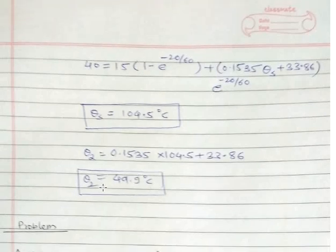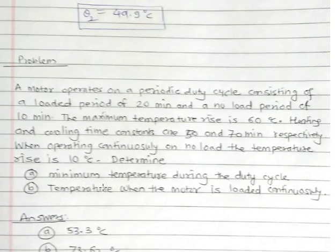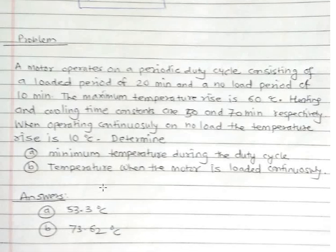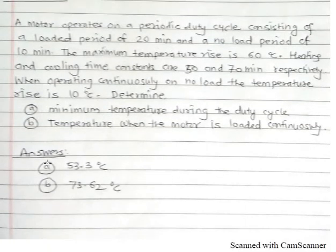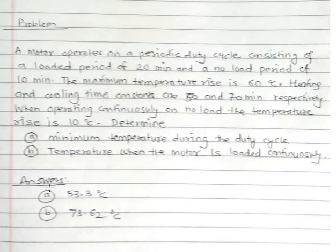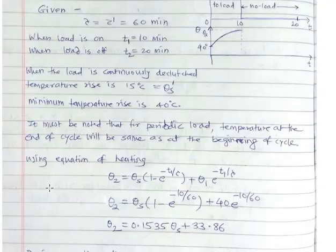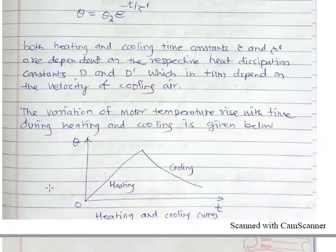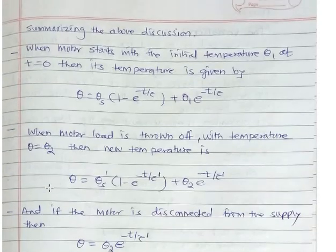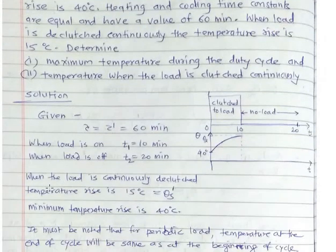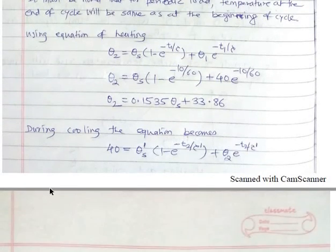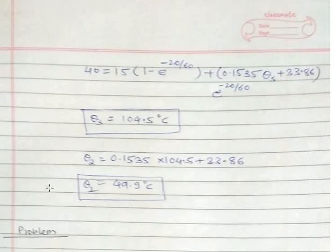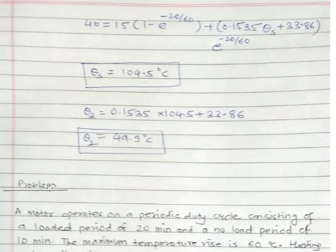There is one more unsolved problem from the textbook; I suggest you solve this example in the same manner, and answers for parts A and B are provided. This is all about the thermal model of motor for heating and cooling. In this video, we derived expressions for the thermal model of motor for both heating and cooling and also when disconnected from the supply, and we solved a numerical related to this topic. Next time we will talk about classes of motor duty. Goodbye.